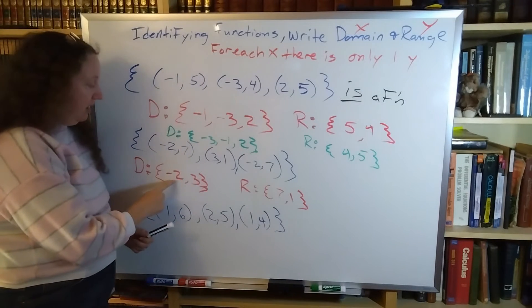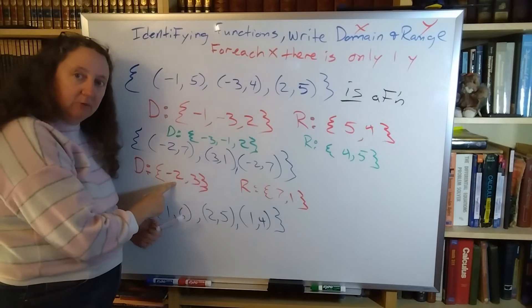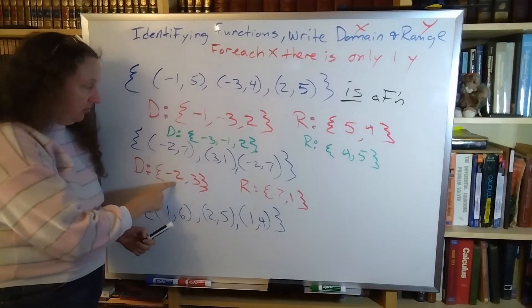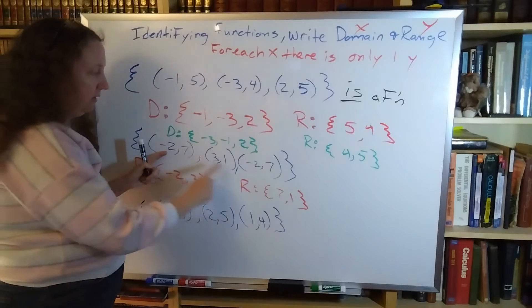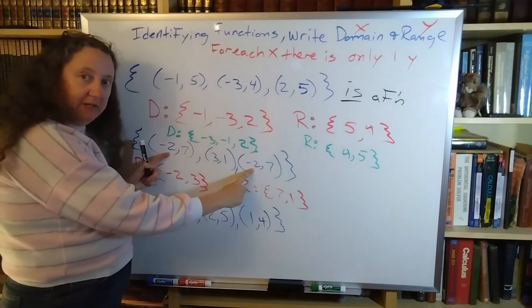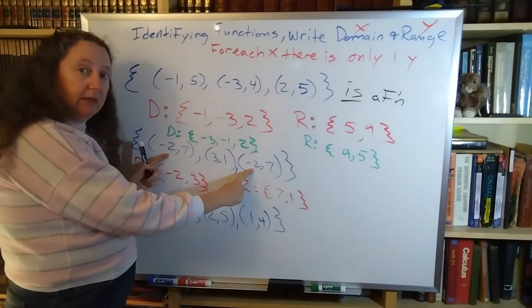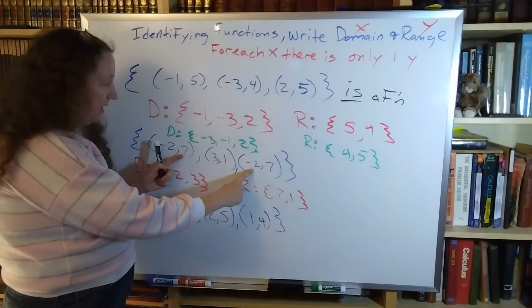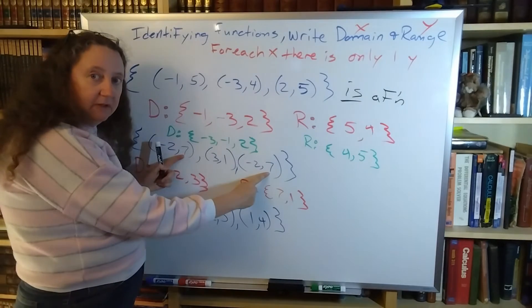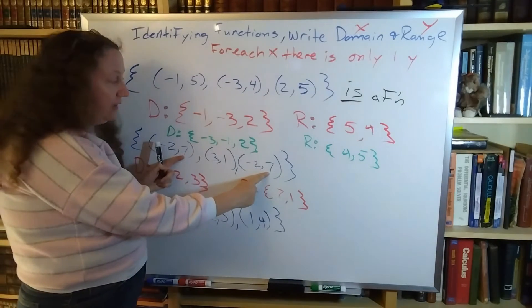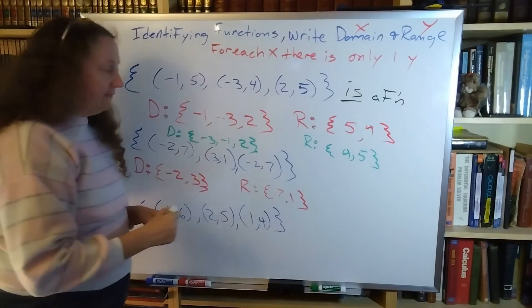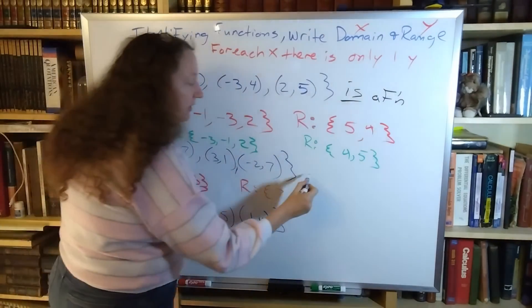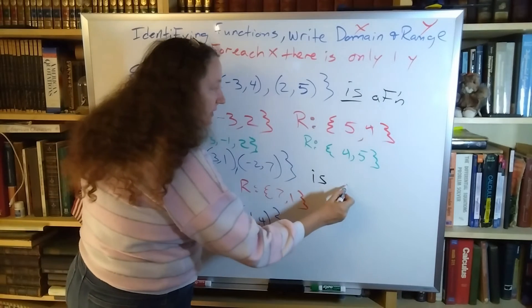Because my domain has a repeat number in it, I have to double-check this. My repeat number is the negative 2, there's the repeat of it. I have to look at the y value for this - I have a 7 for both of them. That means this is okay because that's the same position on a graph. So this is a function.